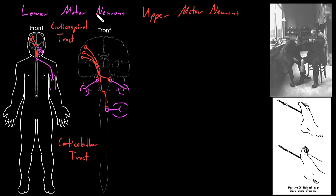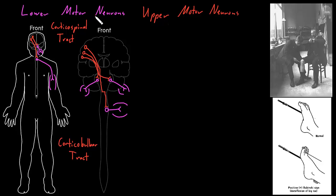Dysfunction of either lower or upper motor neurons can cause weakness. If there's a problem with lower motor neurons not telling skeletal muscle cells to contract, there isn't as much contraction and we see weakness. But if there's a problem with upper motor neurons not telling lower motor neurons to activate skeletal muscle cells, we also see weakness. There are upper motor neuron signs — other findings in addition to or even without weakness — that can help us determine whether the problem is in the lower or upper motor neurons.